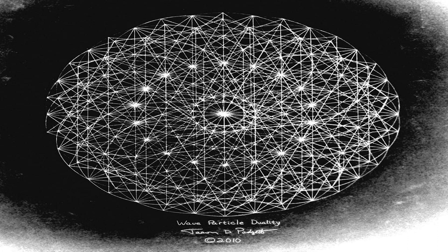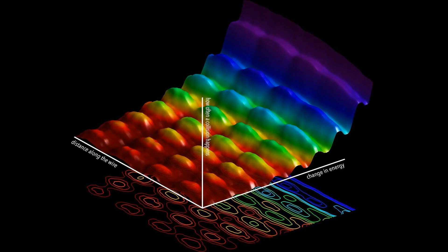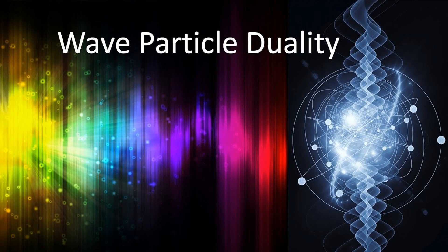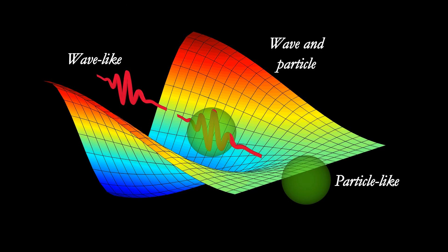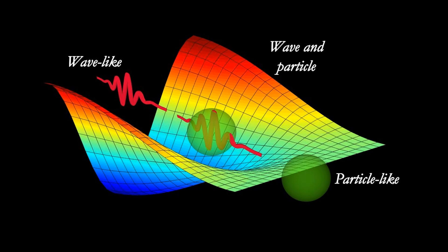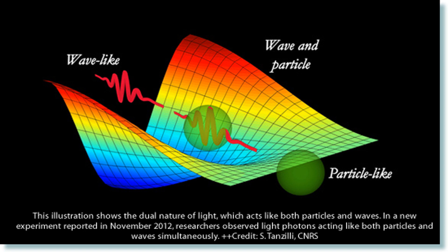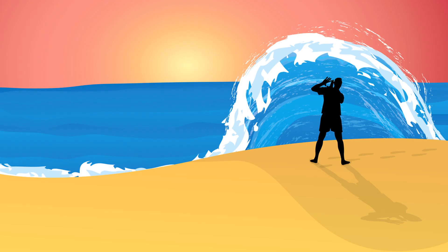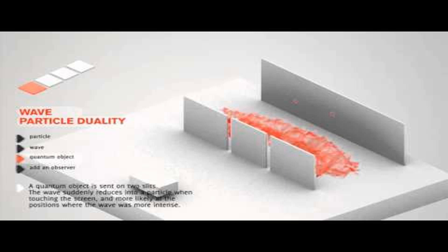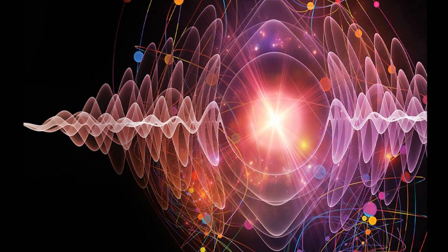Wave-particle duality is the idea that everything in the universe, including particles, can behave like waves and particles. In other words, a particle can be thought of as a wave that has a probability of being in a certain location. This idea is based on the observation that when we measure a particle's position, it behaves like a particle. However, when we measure its momentum, it behaves like a wave. It seems that the act of observing a particle affects its behavior. The more precisely we try to measure a particle's position, the less certain we become about its momentum. Similarly, the more precisely we try to measure its momentum, the less certain we become about its position. This principle is known as Heisenberg's Uncertainty Principle.